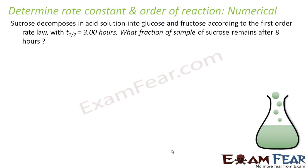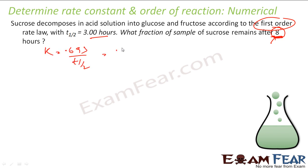Next problem: sucrose decomposes in acid solution into glucose and fructose according to a first-order rate. The half-life t½ is given. What fraction of sucrose remains after 8 hours? To find concentration, I first need K. Since t½ is given and it's first order: K = 0.693/t½. Plugging in t½ = 3 hours gives K = 0.231 per hour.